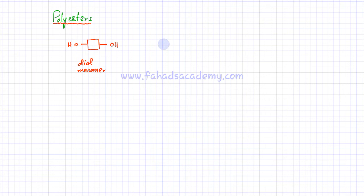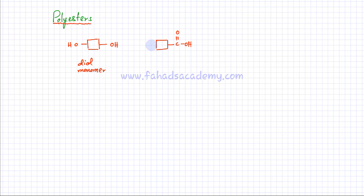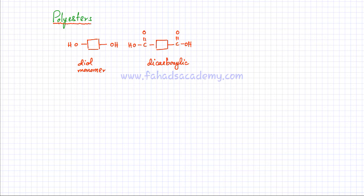The other type of monomer is a molecule — remember these boxes could represent anything. What is meant by these boxes is that it could be any sort of molecule that has these groups attached on both sides. So any molecule that has a carboxylic acid group on both sides. This one is a dicarboxylic acid — my second monomer. 'Di' means two, so there are two carboxylic acid groups. So this is my second monomer: one molecule with OH groups on both sides, and another with carboxylic acid groups on both sides.